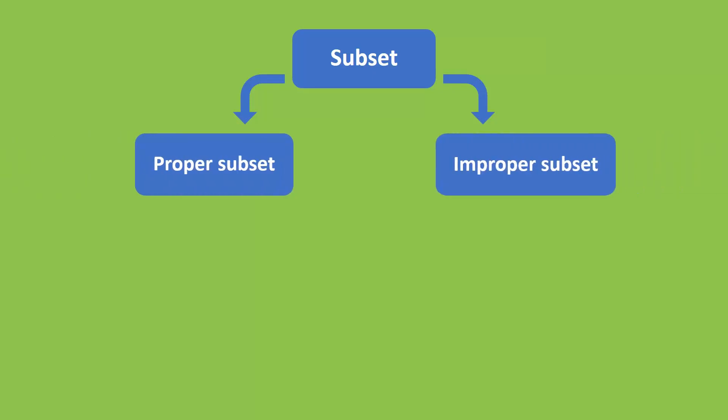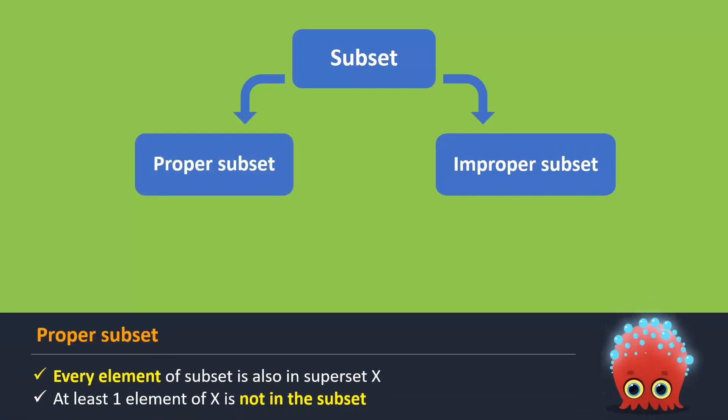Let us look at what proper subset means. If every element of a subset is also in superset X and there is at least one element of X that is not in the subset, then the subset is a proper subset of X. In other words, if the subset contains some but not all the elements of the superset, then it is a proper subset.